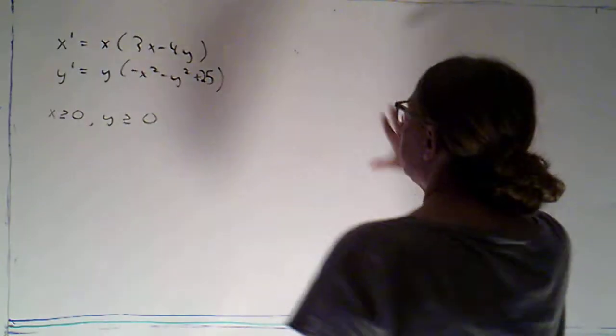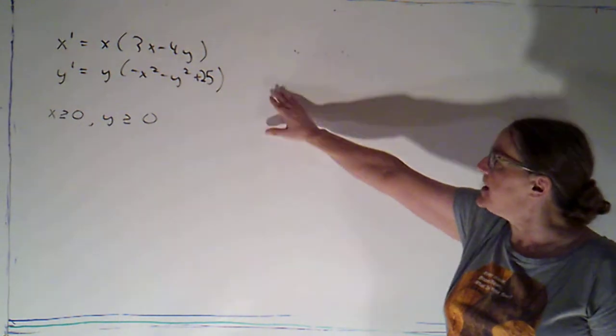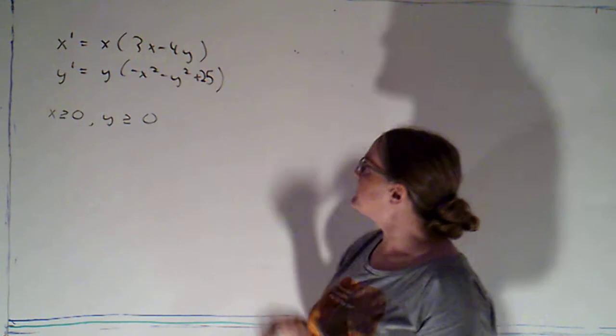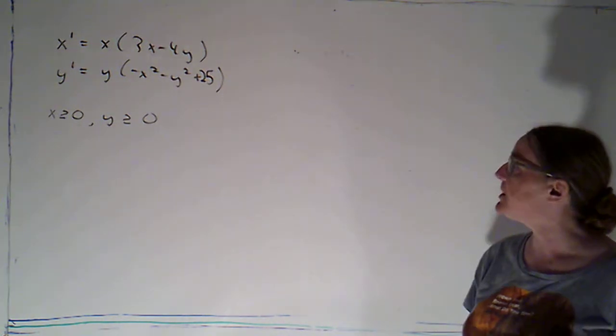Okay, I've got another nonlinear system up here on the board. So x prime is x times 3x minus 4y.